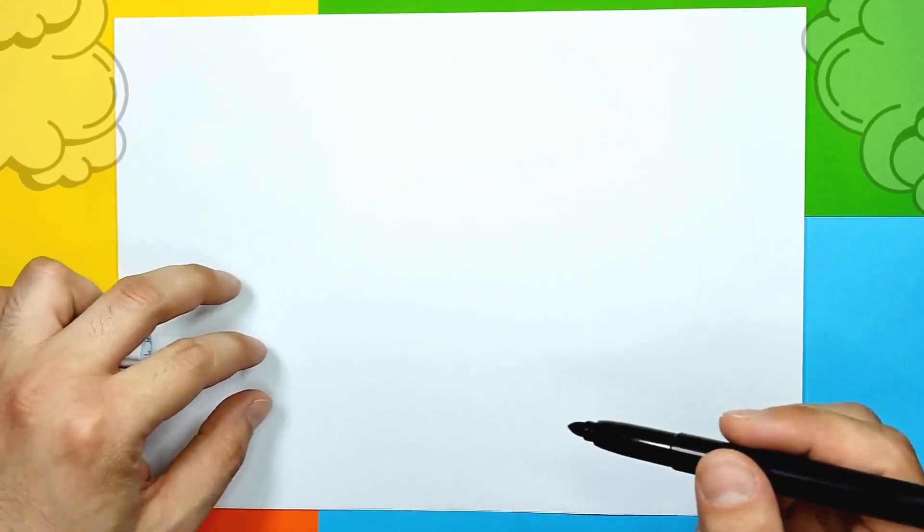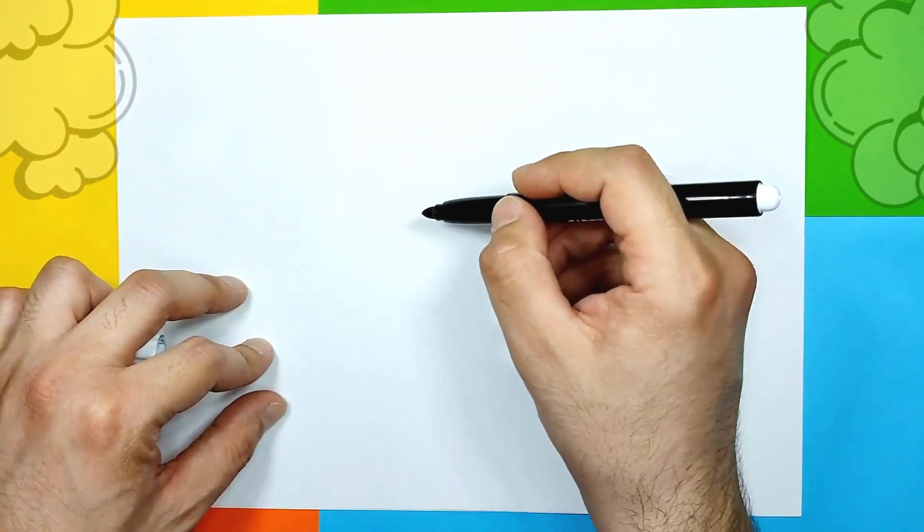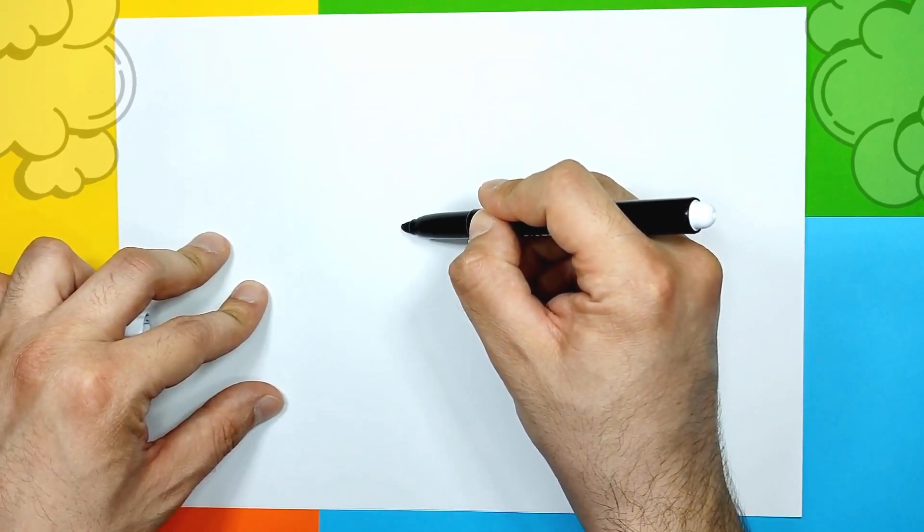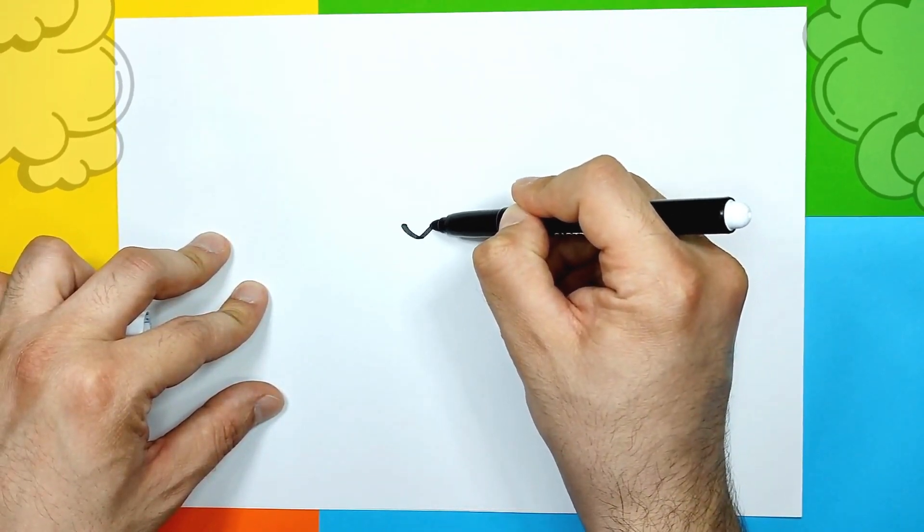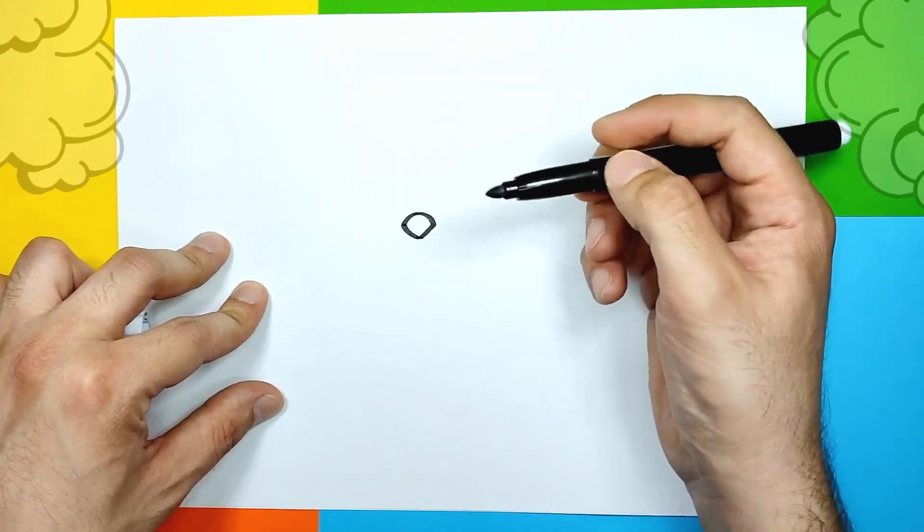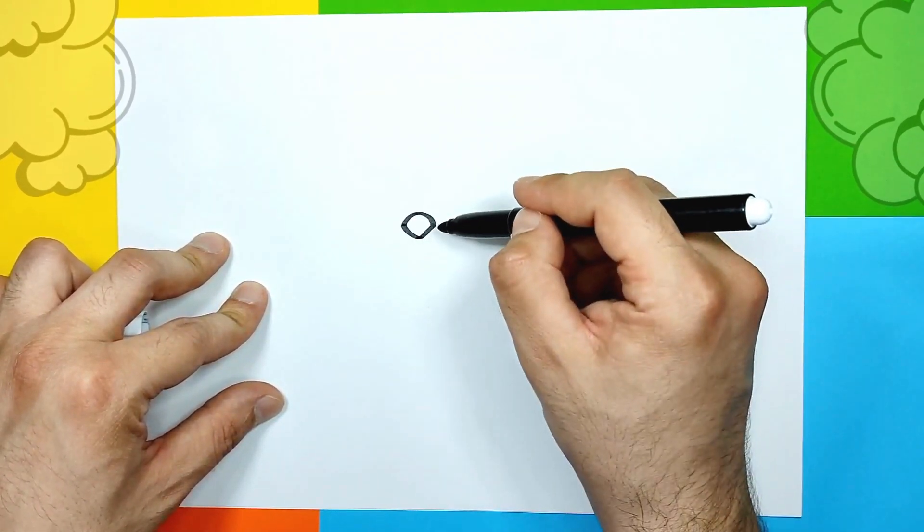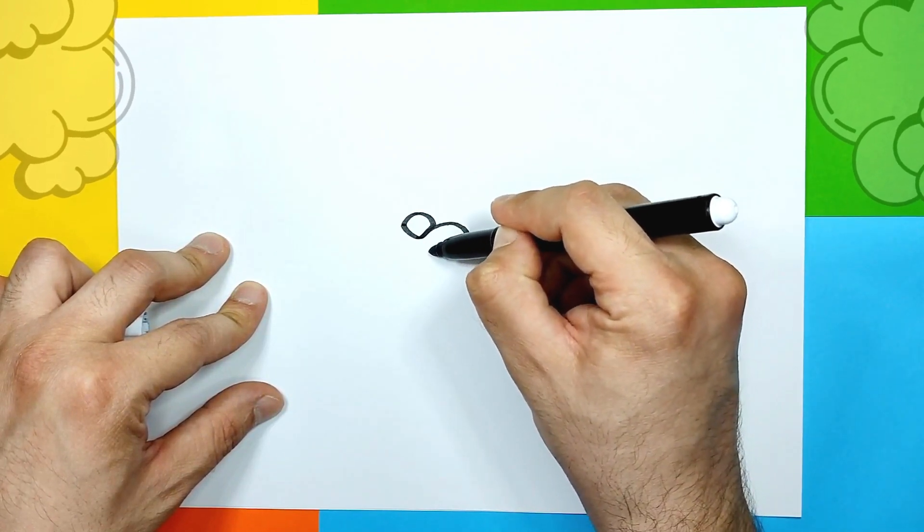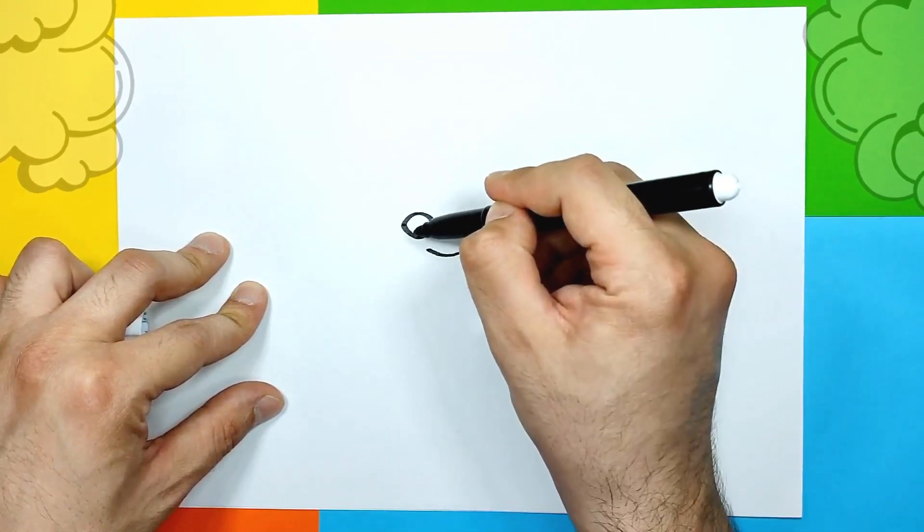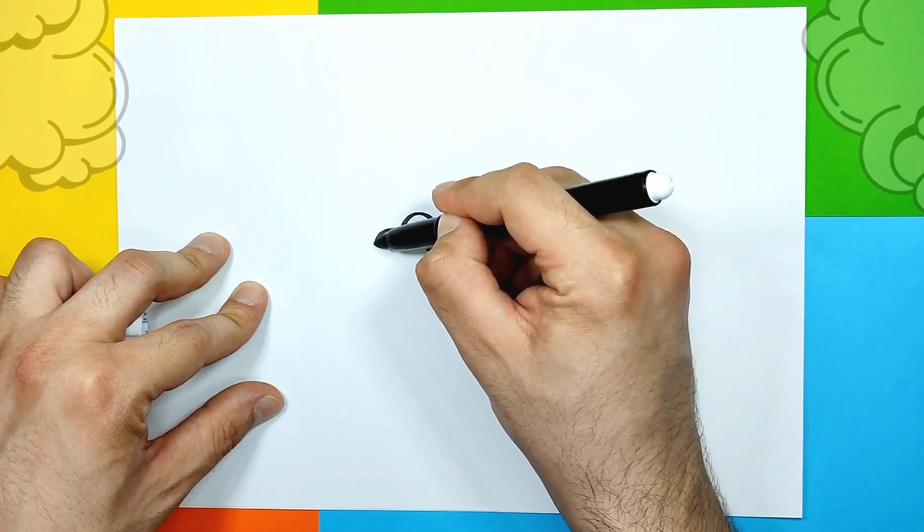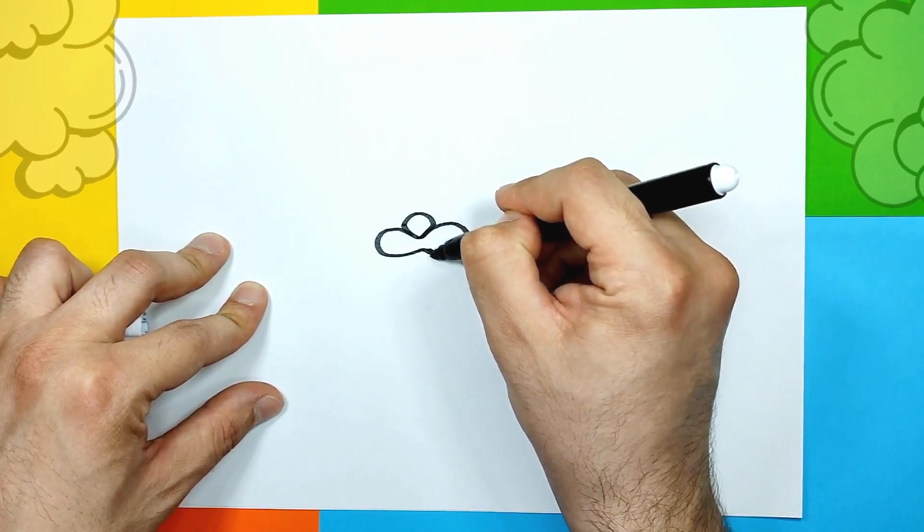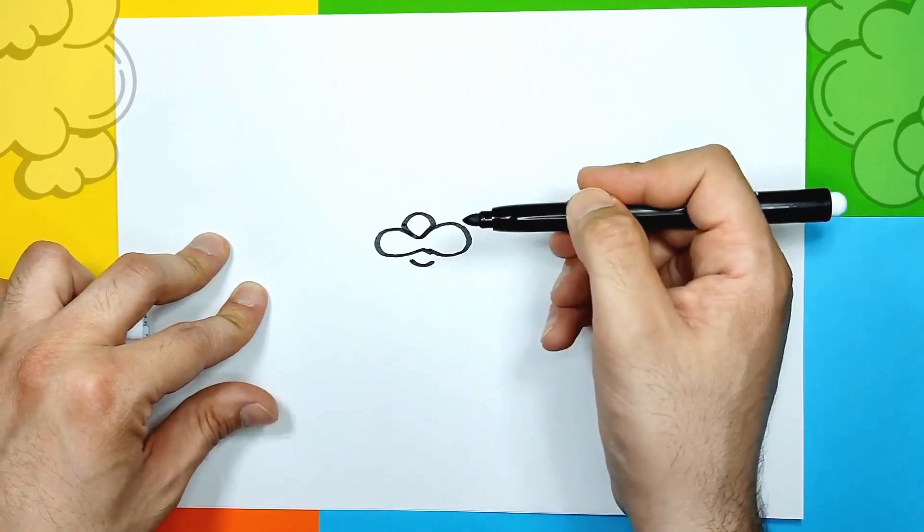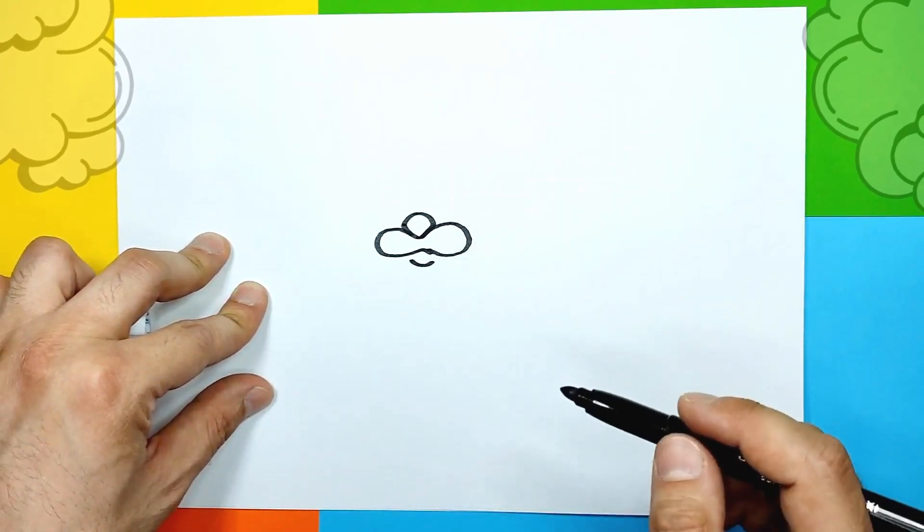Let's create this super cool octopus and we're gonna start by drawing his little nose. We're gonna make a little shape just like this and another on the other side, and we're gonna add a little line below for his mouth.